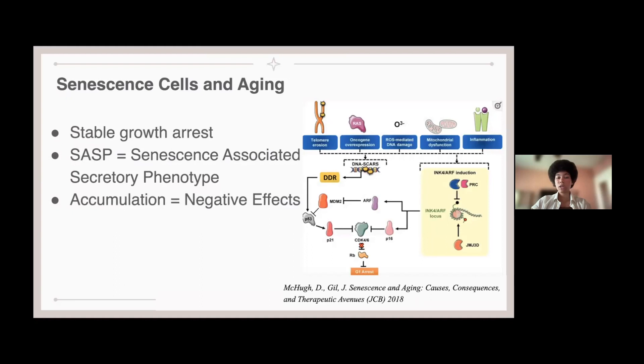such as telomere erosion, mitochondrial dysfunction, etc., and then the pathway it follows through some of the proteins I listed, such as P21 and P16, eventually leading to G1 arrest.